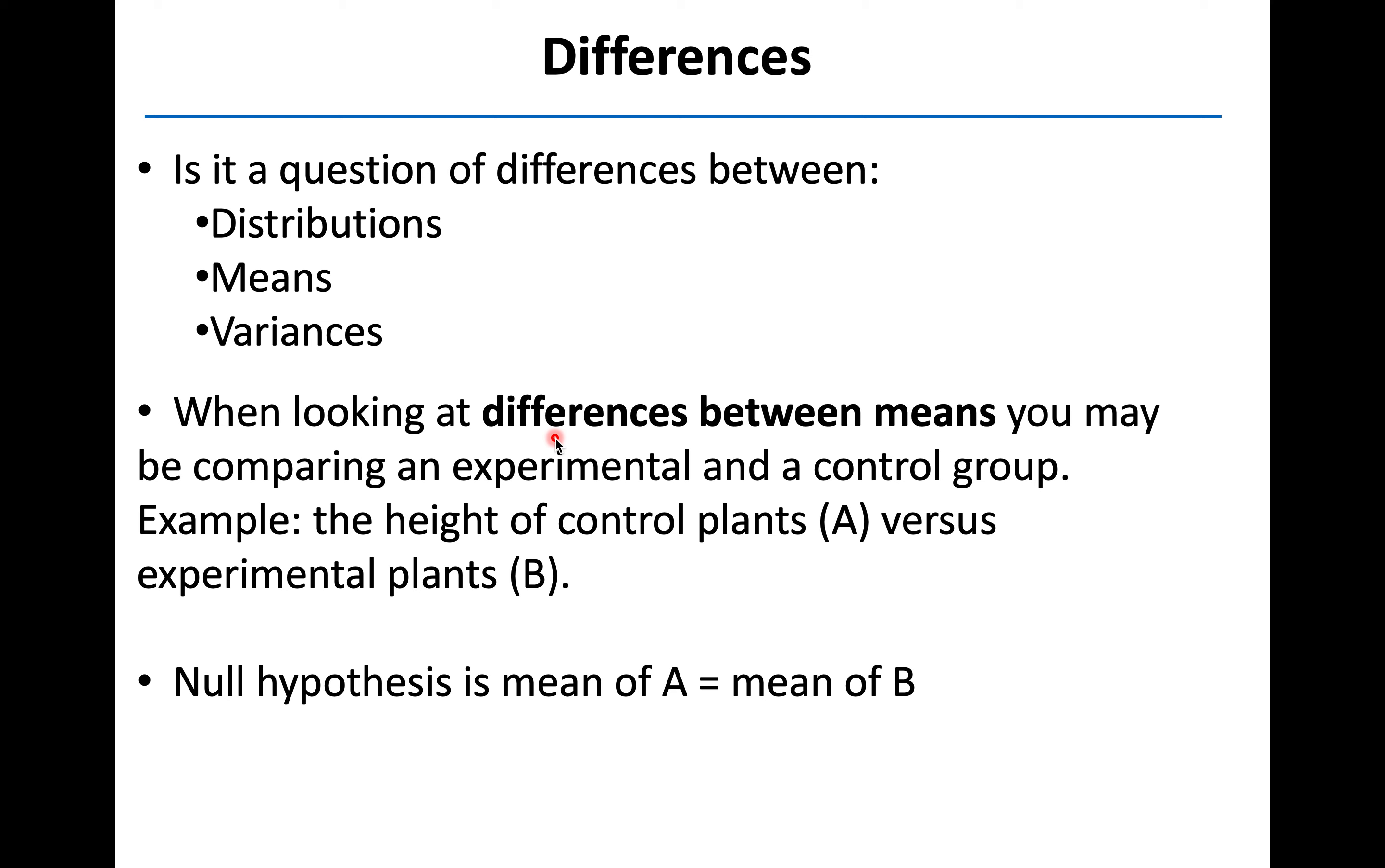If you're looking at a difference between means, typically you're probably going to be comparing an experimental group and a control group. So I'm going to show you just some examples of data plots here, where they're looking at the height of plants in a control group A, versus a group of plants that received some experimental treatment, group B. In this instance, the null hypothesis is going to be that the mean height of plants in group A is exactly the same as the mean height of plants in group B. No difference at all.